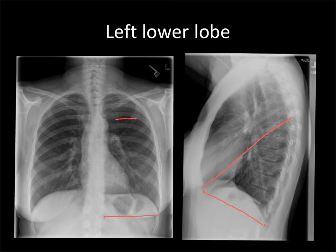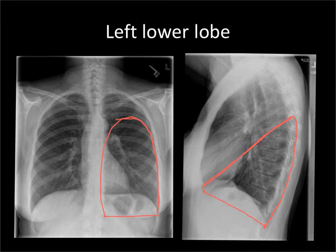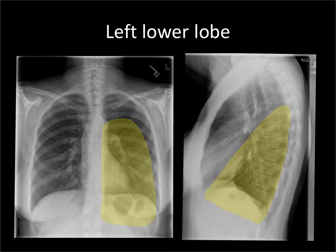Now we have all the information we need to know where the left lower lobe projects on both the frontal and the lateral radiograph. And here's a drawing that I made earlier.